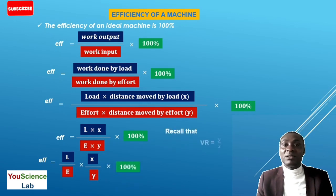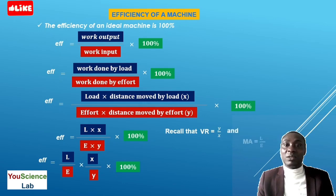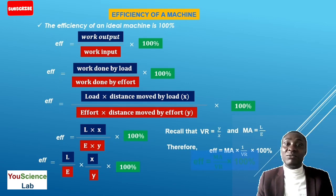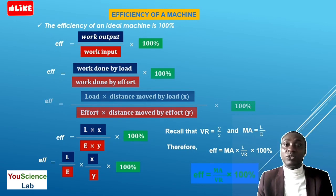Recall that velocity ratio is the distance moved by effort divided by the distance moved by load, and mechanical advantage is equal to load over effort. We can therefore say that efficiency is equal to mechanical advantage times the reciprocal of the velocity ratio times 100%. Therefore, efficiency equals mechanical advantage over velocity ratio times 100%.